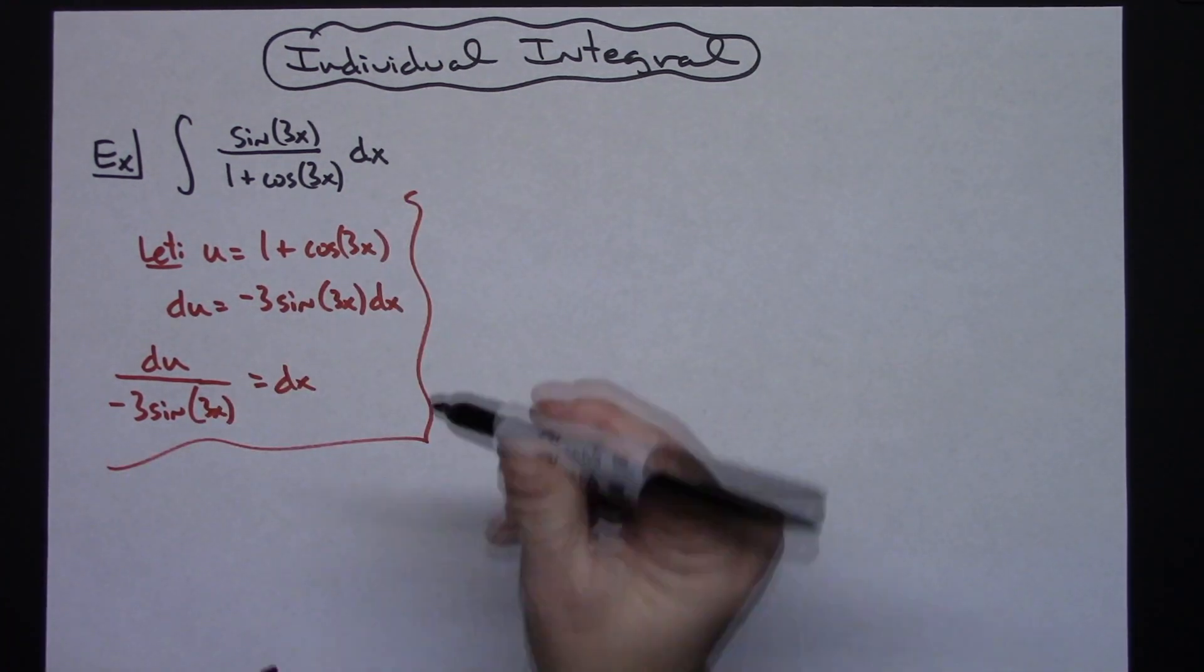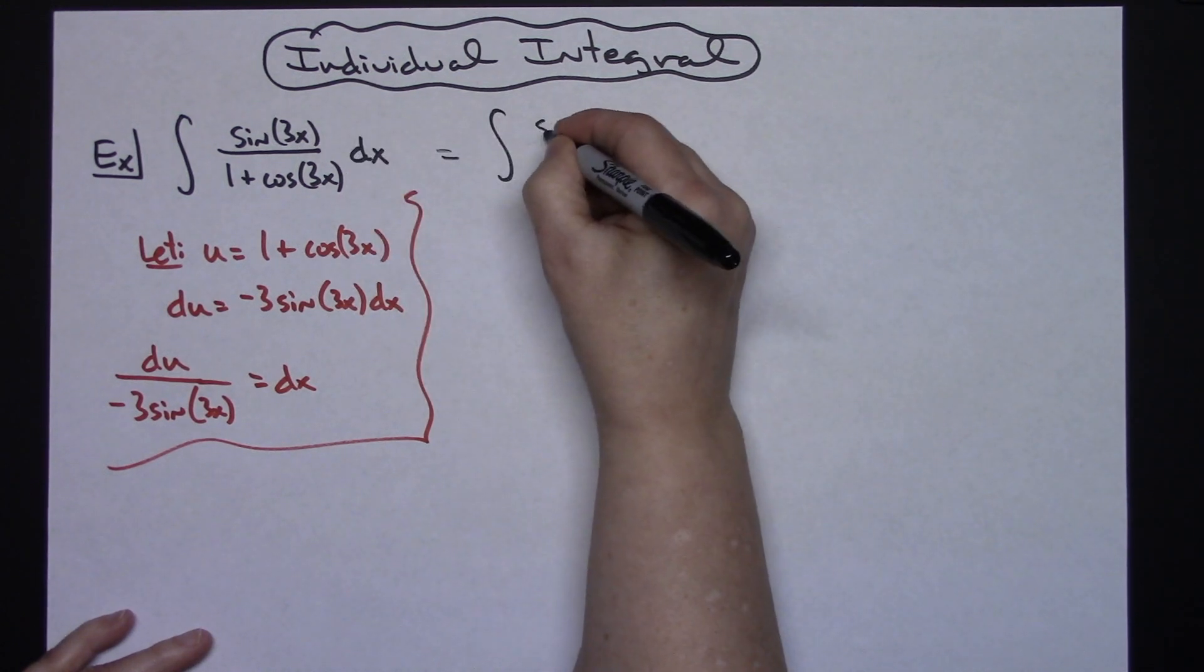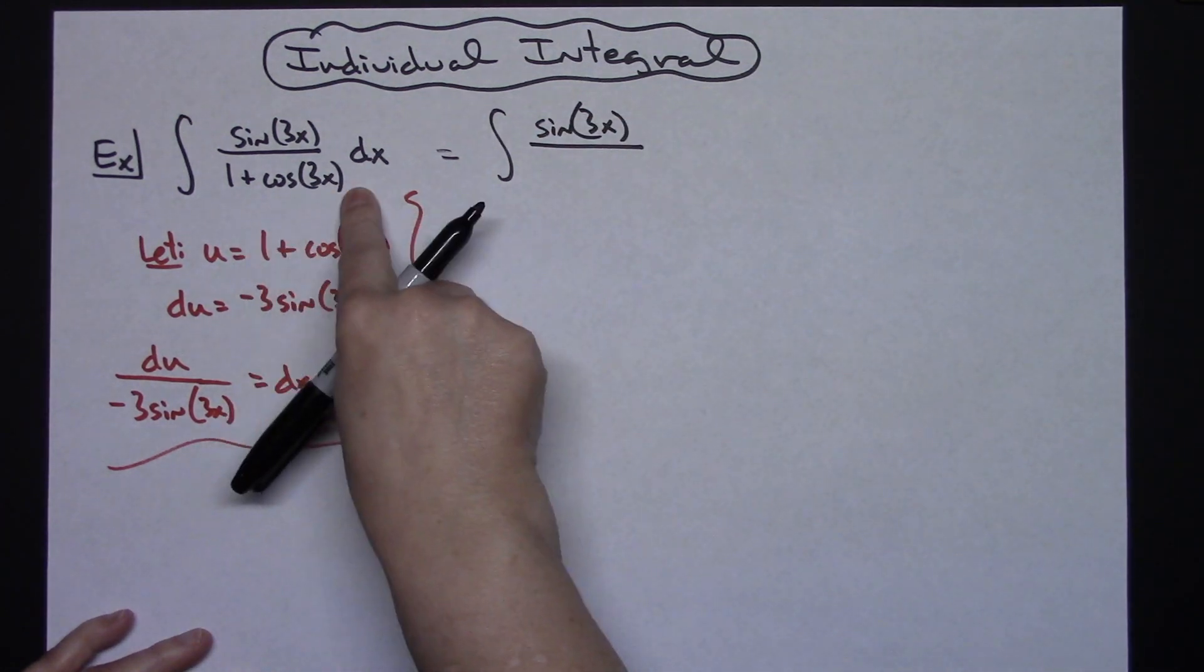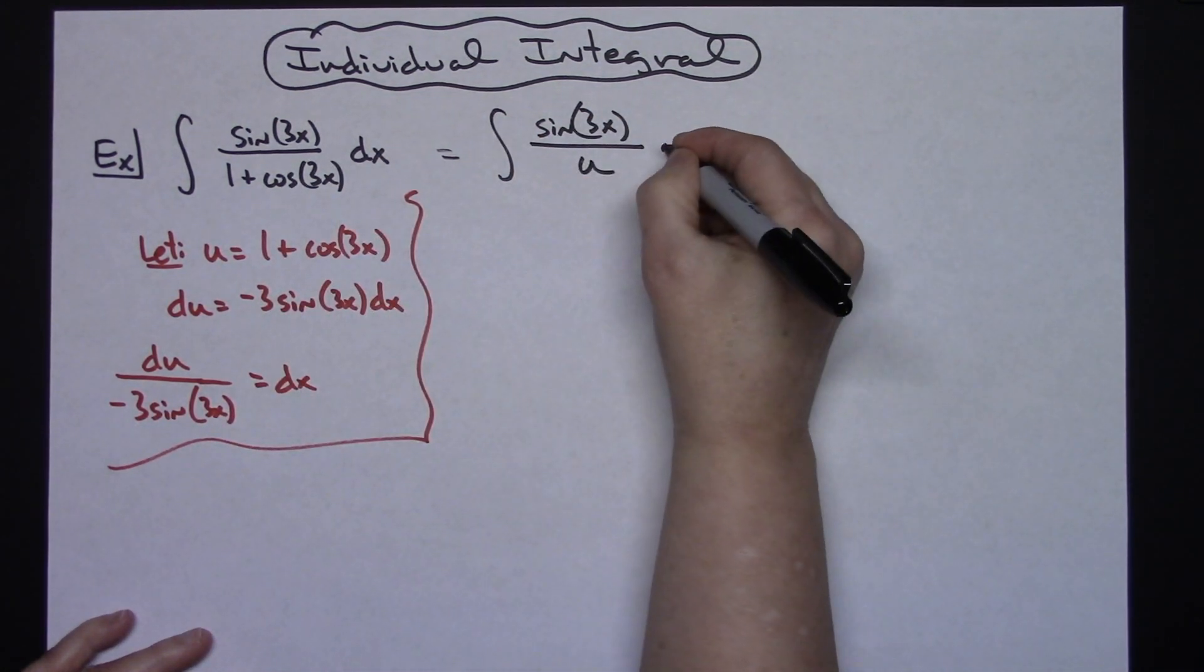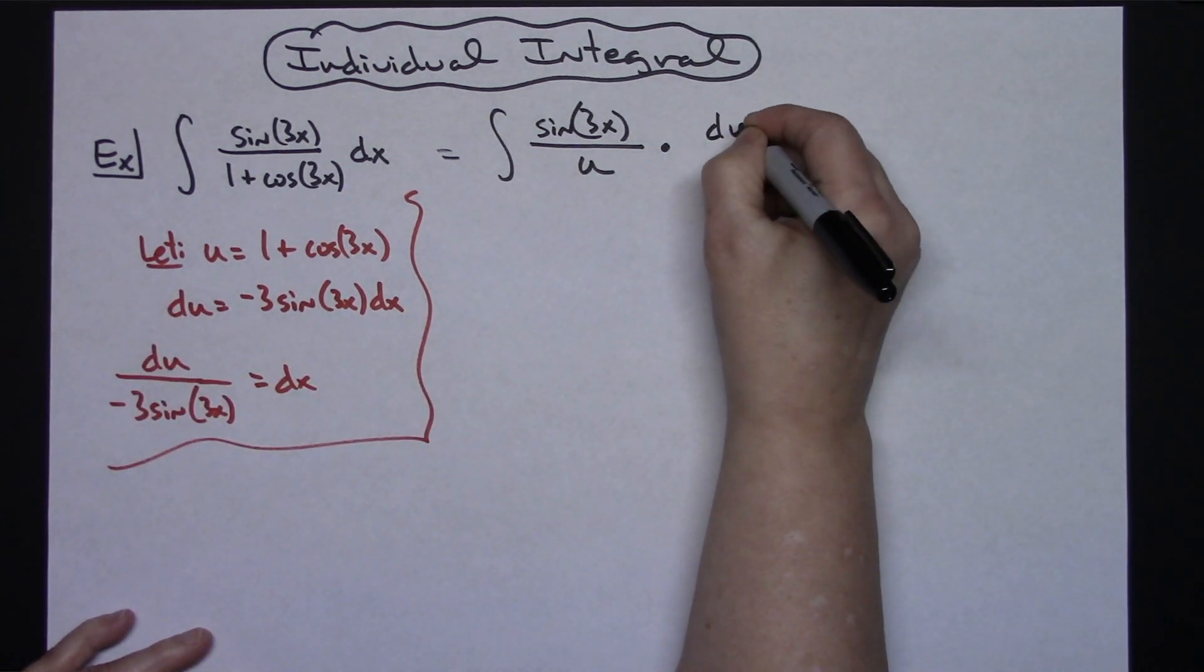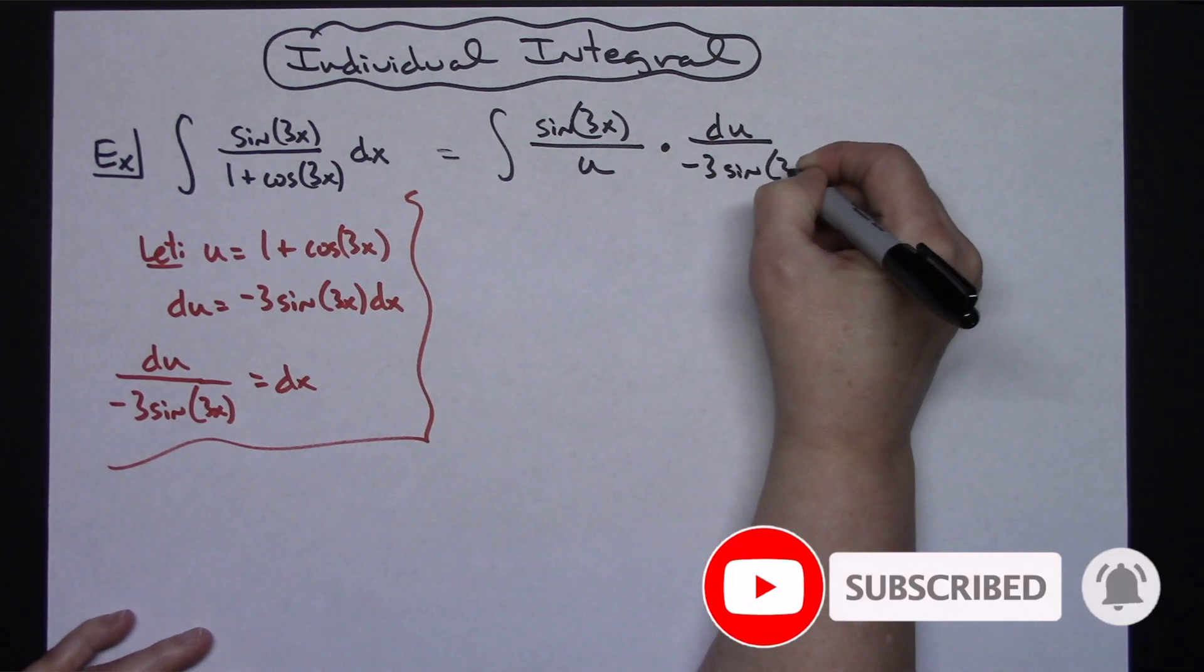So I'm going to come back up here and I'm going to start substituting. We'll still have the sine of 3x in the top, and in the bottom there we will have a u. And replacing dx with what it equals, then I'll have a du over a negative 3 sine of 3x.